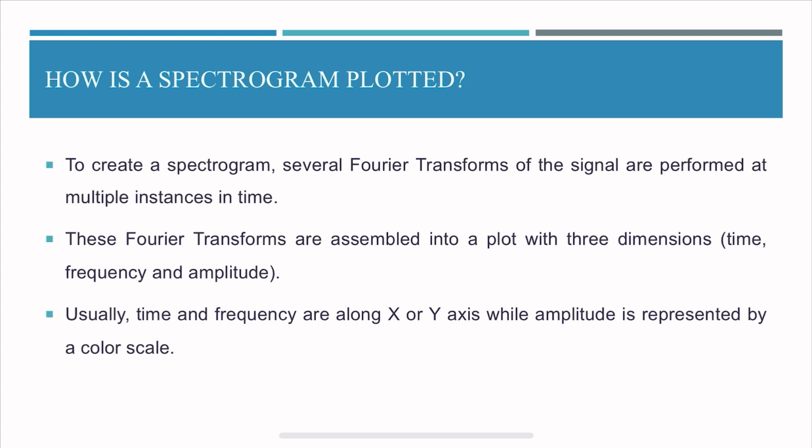Now usually the spectrogram is a three-dimensional plot, so you have amplitude, frequency, and time, but it'll be difficult to visualize things in 3D. Maybe it's not easy for everybody, but then there's a workaround so we can have two axes which represent time and frequency, and the third axis is not really an axis but rather it's in a color scale.